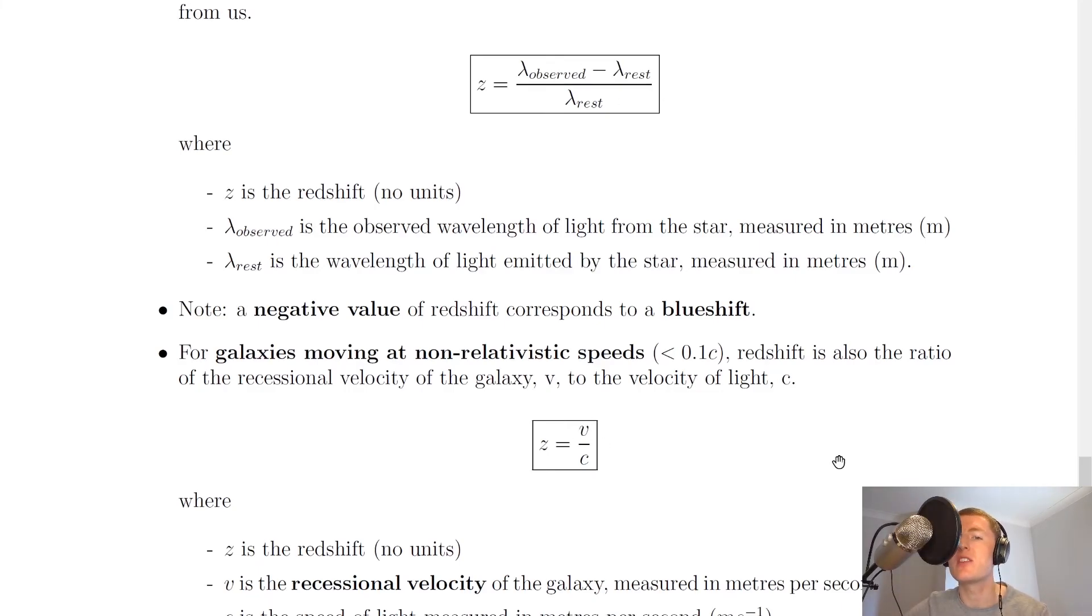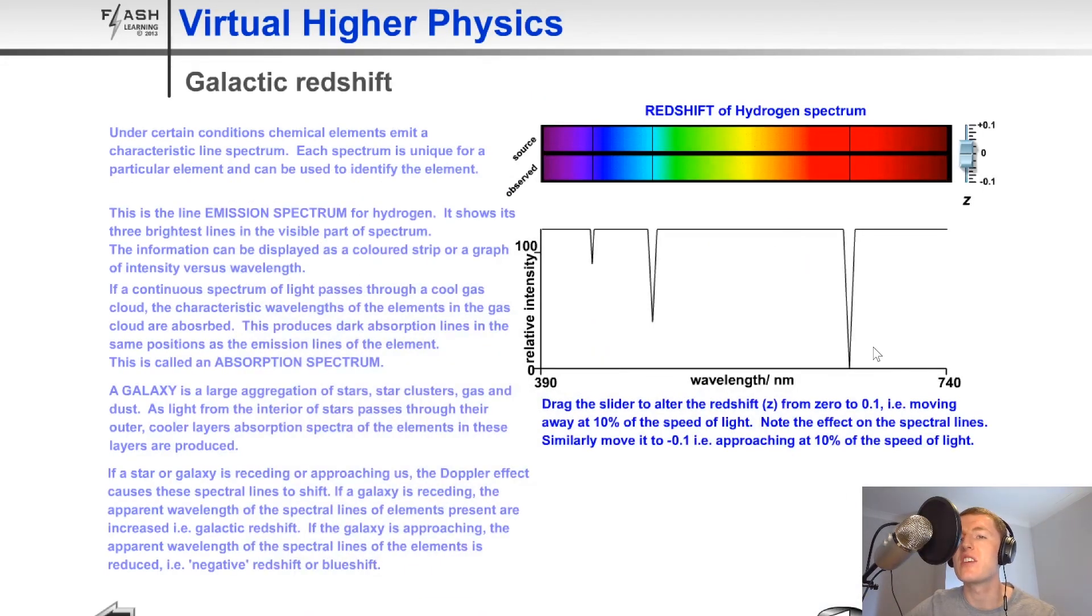Lastly, I'm just going to show you a quick animation to summarize the redshift and blueshift ideas. You can just ignore all the text here, but we've got some hydrogen spectra here, and it says that this is the source and this is the observed. So if we move our slider here from 0 to a positive z value of 0.1, then that's a positive value of z which means we get redshift. You'll notice that our observed spectral lines have shifted towards the red end of the spectrum to the right here. If we go back to 0 though, and then we go to a negative value of z to minus 0.1, you'll notice this time the spectral lines are shifting towards the blue end of the spectrum to the left.